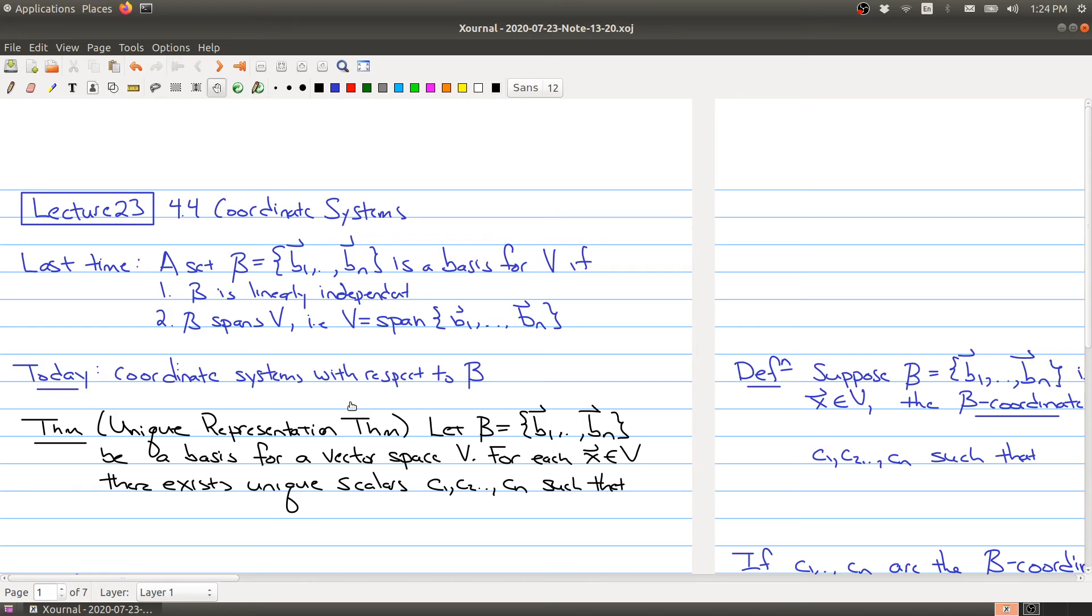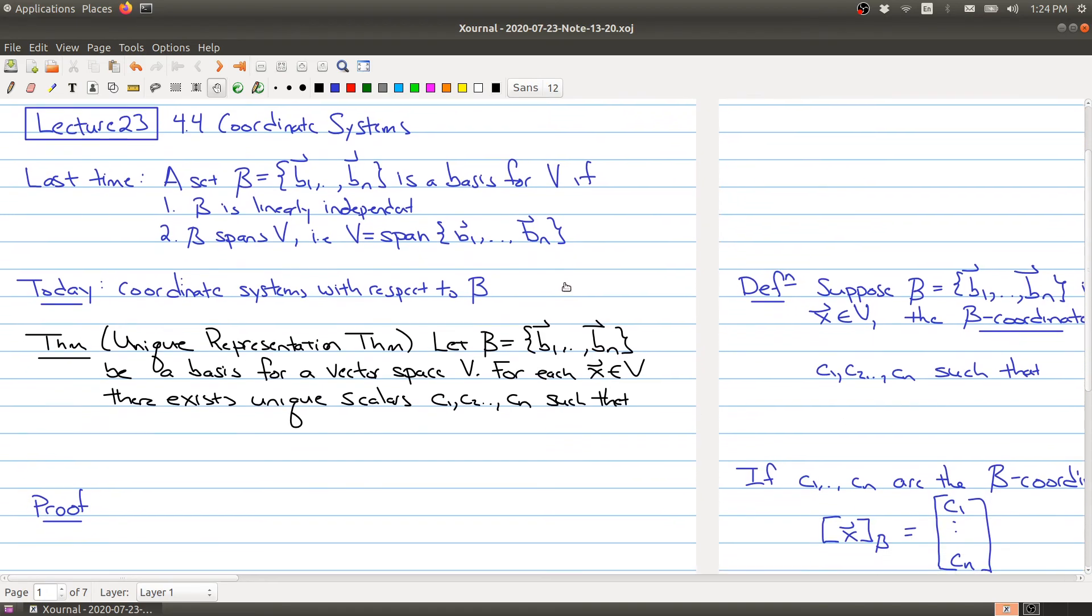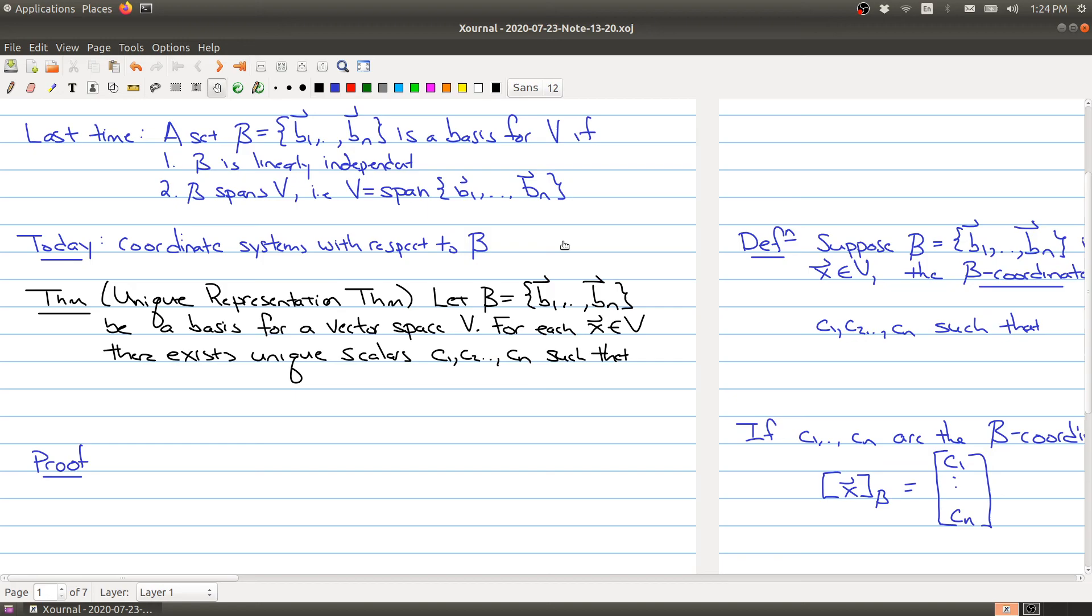So the first part here I want to talk about the Unique Representation Theorem. The Unique Representation Theorem is kind of what drives all of today's lecture. So let me state this, go through the statement of the theorem, and then we'll walk our way through the proof because it's an important proof. So you have to imagine that you have a basis that's been fixed for your vector space V. Now for any vector that you take in your vector space V, there exist unique scalars c1 through cn such that x is equal to c1 times b1 plus c2 times b2 all the way up to cn times bn.